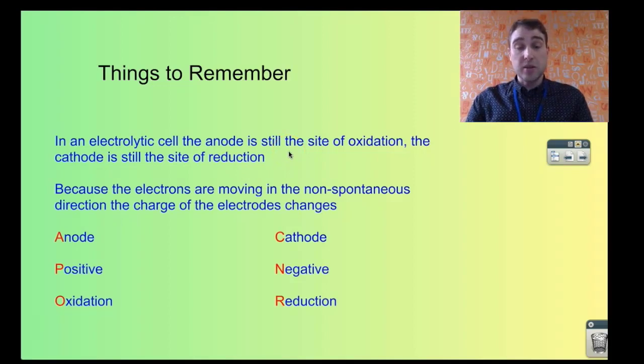Because we're forcing the electrons in the opposite direction, what would normally be anode negative oxidation for a galvanic cell becomes anode positive oxidation. And over the other side what would normally be cathode positive reduction becomes cathode negative reduction. So you can still use your mnemonics from the galvanics to help you remember, but you just have to remember that the charge changes over. In an electrolytic cell the charge is reversed compared to the galvanic cell.